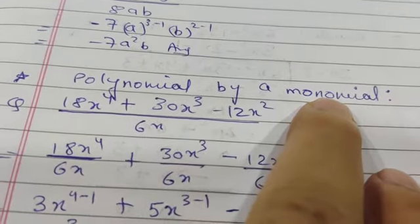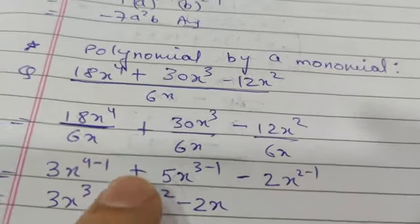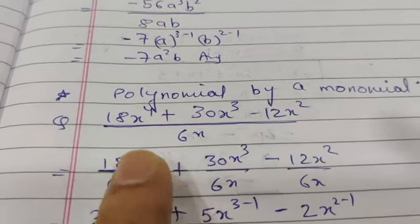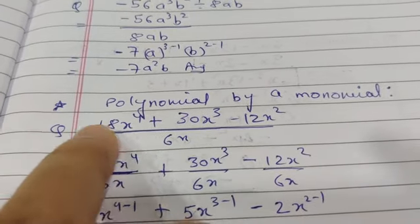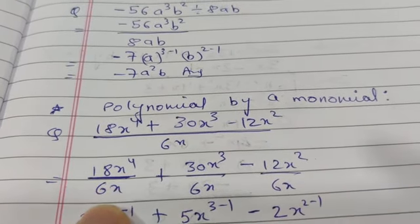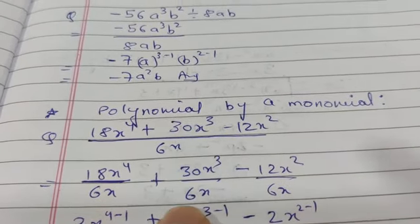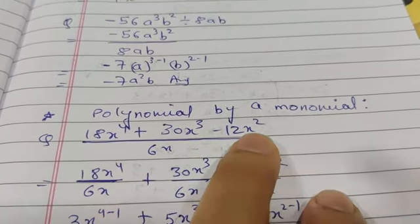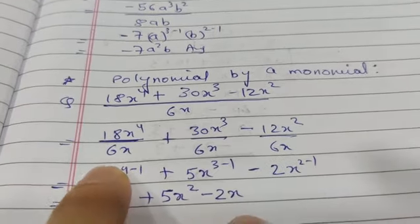Second is polynomial by a monomial. We will divide a polynomial by a monomial. So first of all we need to break each and every term with the divisor. 18x to the power 4 upon 6x, plus 30x cubed upon 6x, then minus 12x squared upon 6x.